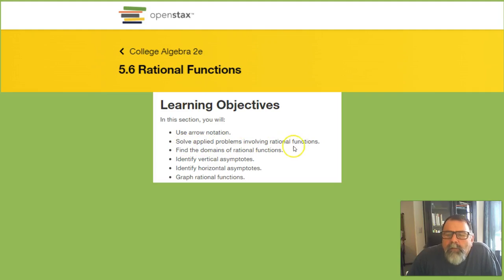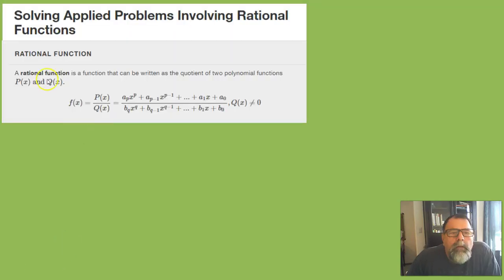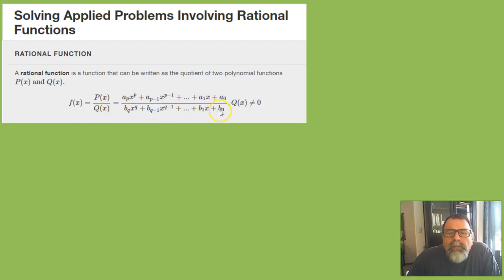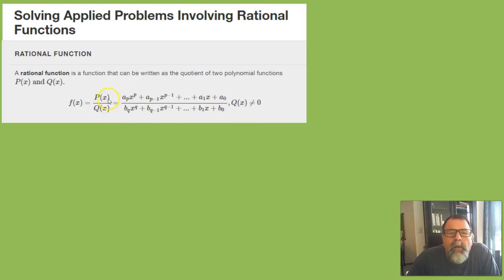The next learning objective: solve applied problems involving rational functions. A rational function is a function that can be written as a quotient of two polynomial functions, p(x) and q(x), written in descending order, where the denominator q(x) cannot equal zero. A rational function is simply a ratio of two polynomials.